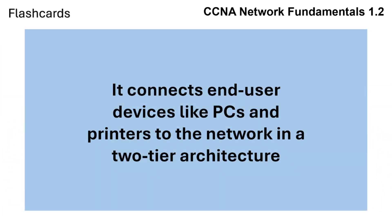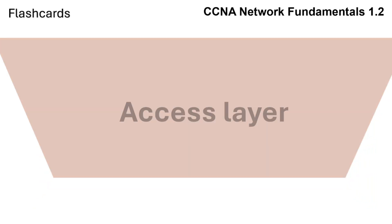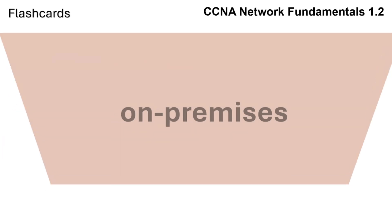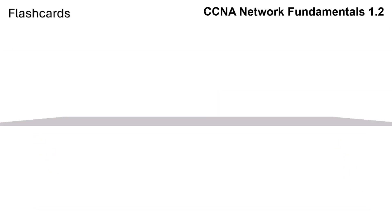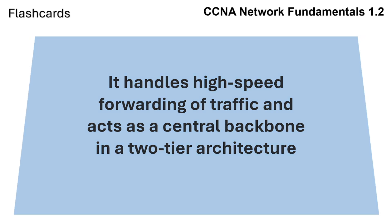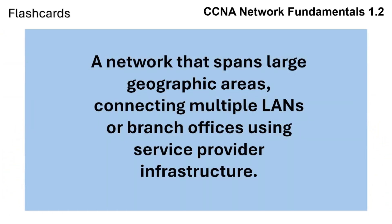It connects end-user devices like PCs and printers to the network in a two-tier architecture. Infrastructure physically located and maintained within a company's facility. It handles high-speed forwarding of traffic and acts as a central backbone in a two-tier architecture. A network that spans large geographic areas, connecting multiple LANs or branch offices using service provider infrastructure.